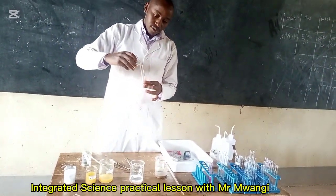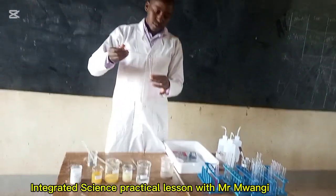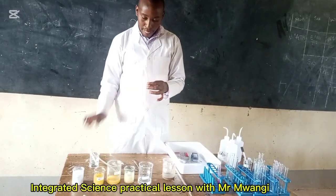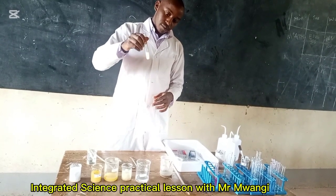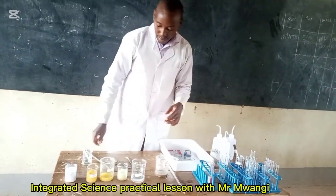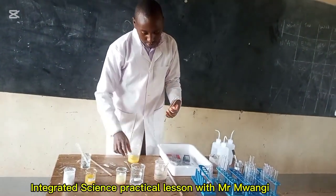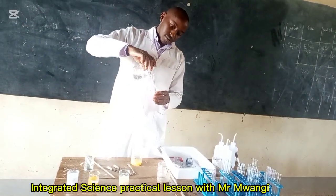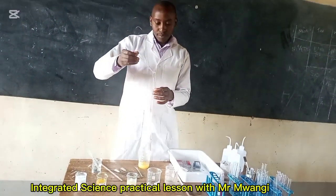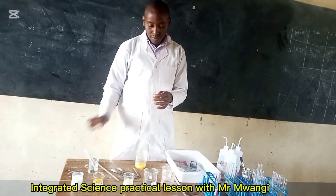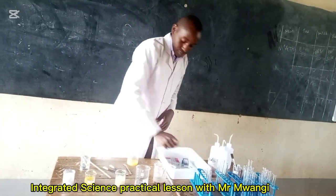I'll pick a second test tube and add a few drops of solution D — in my case that was lemon juice — and I notice that the color will not change; it will remain colorless, meaning that is an acidic solution. I'll pick another test tube, add solution B which is colorless, and add a few drops of phenolphthalein indicator. Again the color will remain colorless, meaning that is a neutral solution.